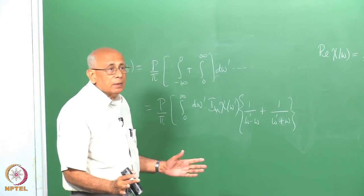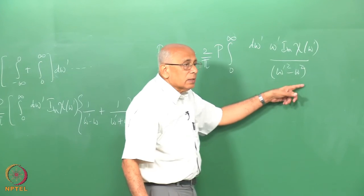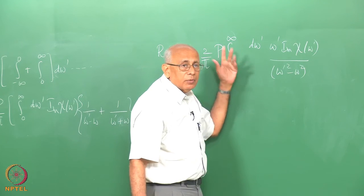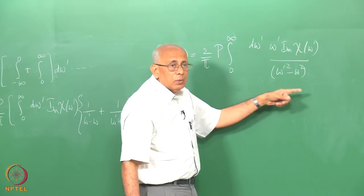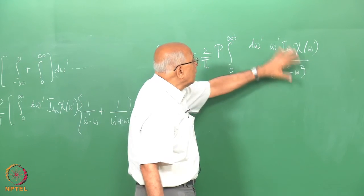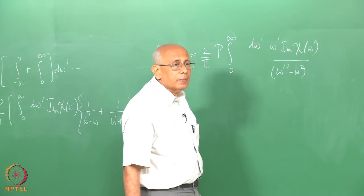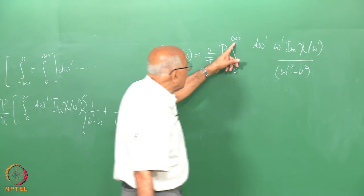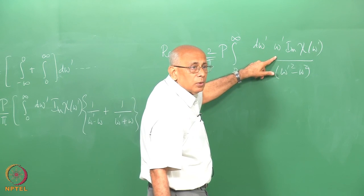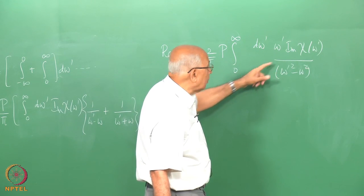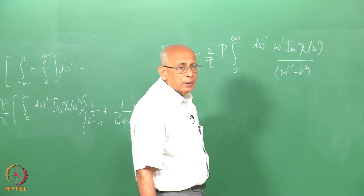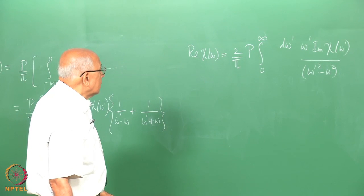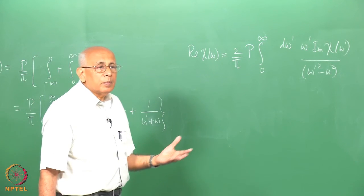This gives the useful representation: the real part of chi(omega) equals 2 over pi times the principal value from zero to infinity of d omega prime times omega prime times the imaginary part of chi(omega prime), divided by omega prime squared minus omega squared. Now everything is physical. The denominator has a simple pole at omega prime equal to omega; the pole at minus omega is outside the region of integration. At infinity, the R factors cancel, this goes to zero, and the integral exists. This is the physical form of the dispersion relation.